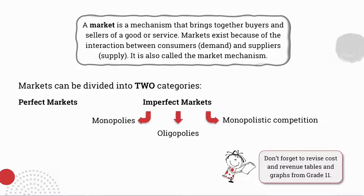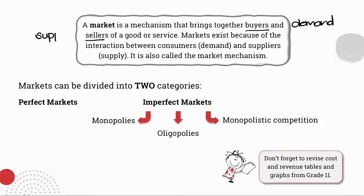Let's kick off today's lesson by looking at the definition of a market. A market is a mechanism that brings together buyers and sellers of a good or service. Another word for buyers is simply demand, and another word for sellers is simply supply. Where demand and supply intersect, the equilibrium point — price and quantity — will be formulated, and this is also known as the market mechanism.